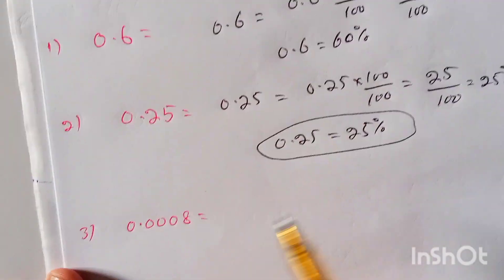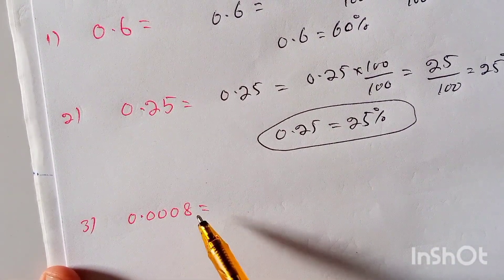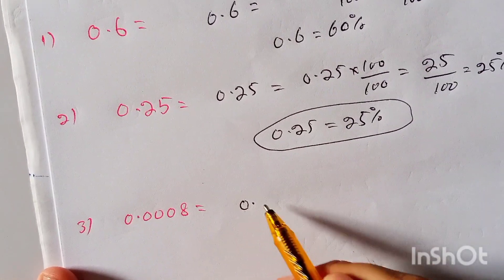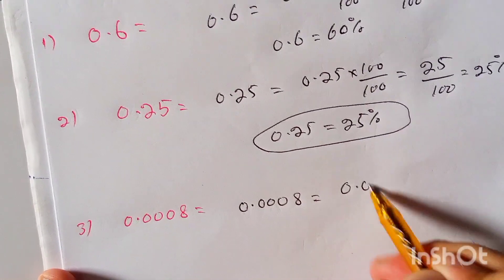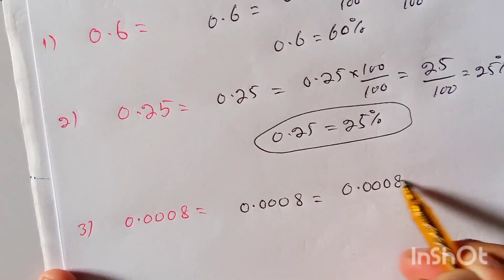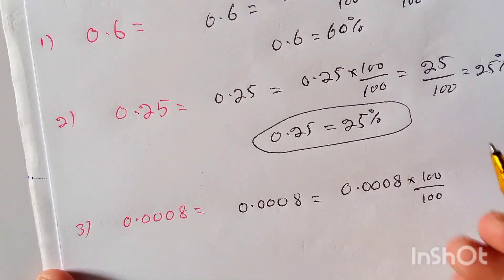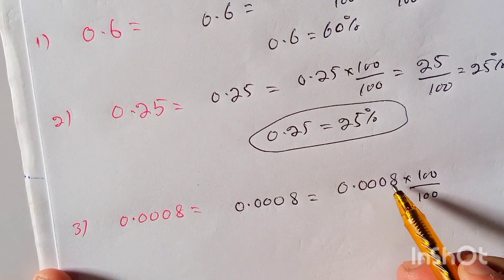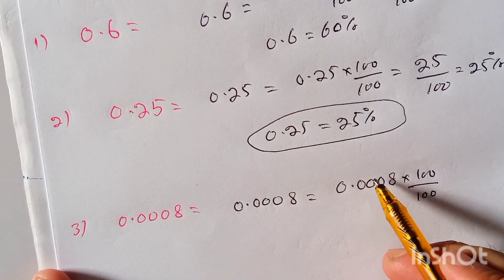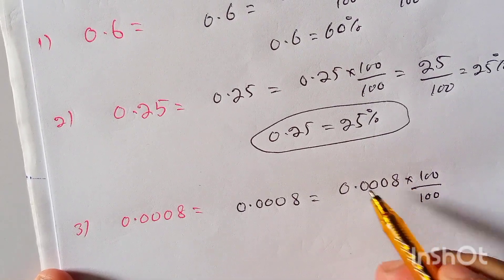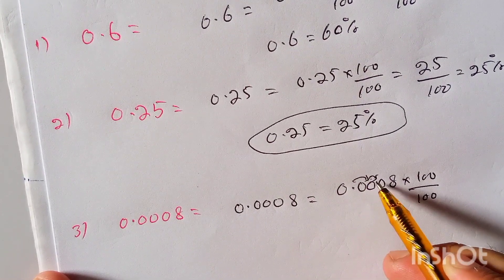Now, what is 0.0008 in percentage? So 0.0008 is equal to 0.0008 multiplied by 100, divided by 100. To multiply 0.0008 by 100, we will carry the decimal point two places from left to right — this is the first place and this is the second place — and we will put the decimal point here.